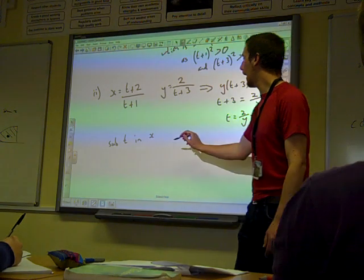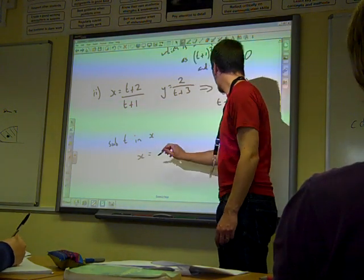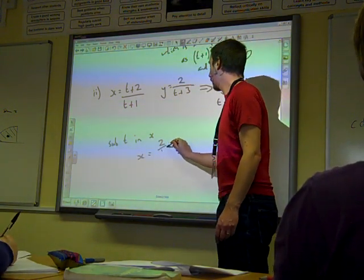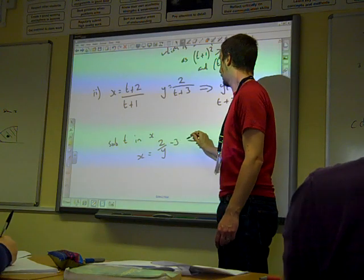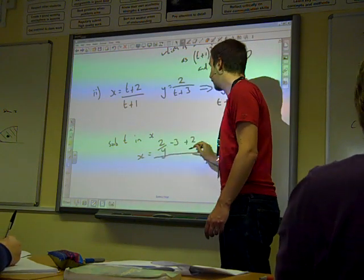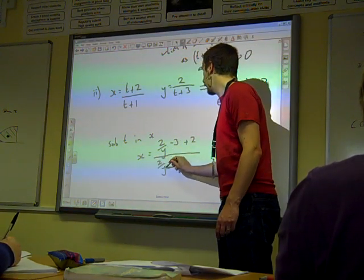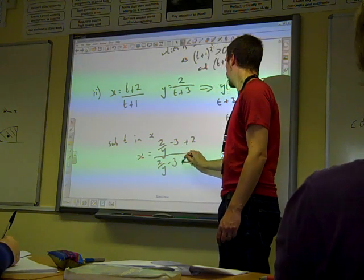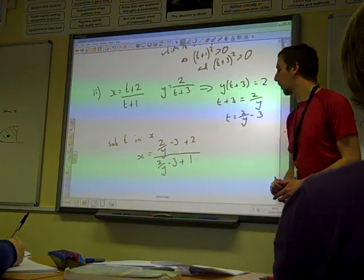So we sub that value of t into the x equation. And we're going to have x equals 2 over y minus 3 plus 2. And we're going to have 2 over y minus 2 over 2 over y minus 3 plus 1.